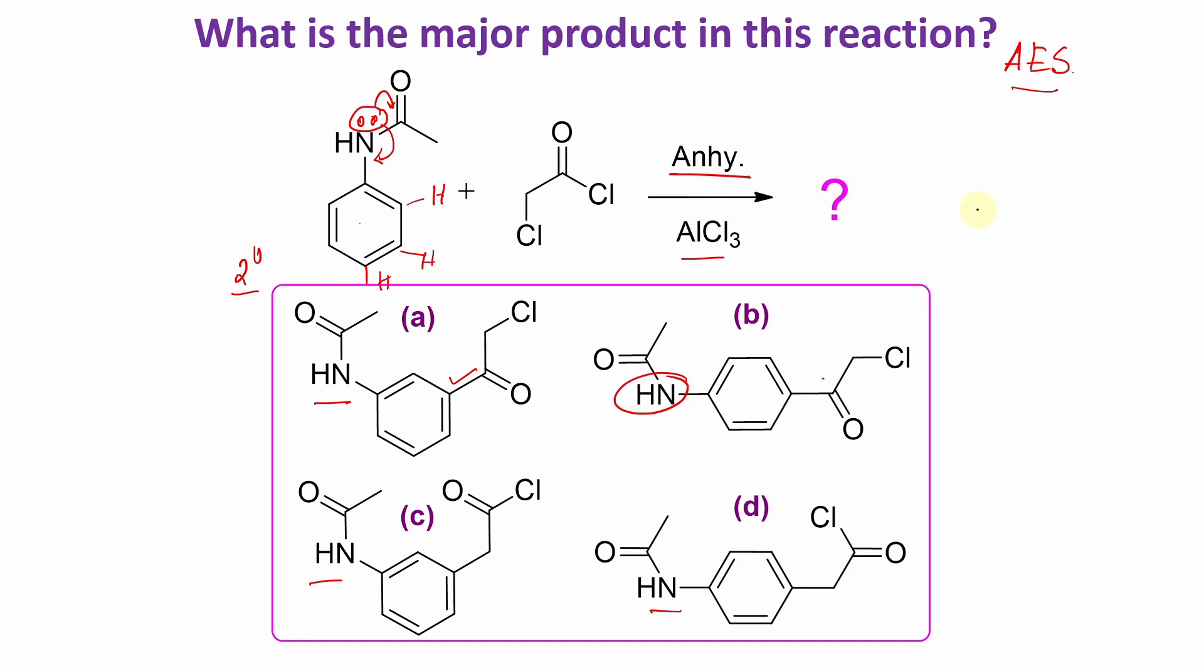This AlCl3 is actually a covalent molecule. You can understand one aluminium attached to three chlorine with three covalent bonds. Each covalent bond has two electrons. So total, this aluminium's outermost shell has six electrons. You can say it's an incomplete octet or technically a sextet. Since it is incomplete octet, it can act as a Lewis acid.